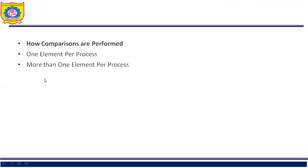A third issue is one element per process. Consider the case where each process holds only one element of the sequence to be sorted. At some point, a pair of processes PI and PJ may need to compare their elements AI and AJ. After the comparison, PI will hold the smaller and PJ will hold the larger of AI and AJ. This is performed by having both processes send their elements to each other; each process compares the received element with its own and retains the appropriate element. This operation is referred to as compare and exchange.